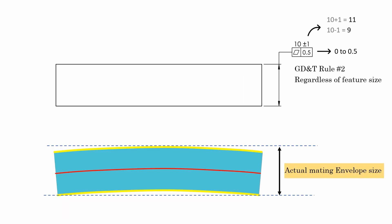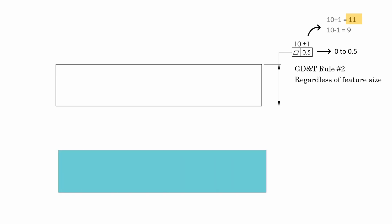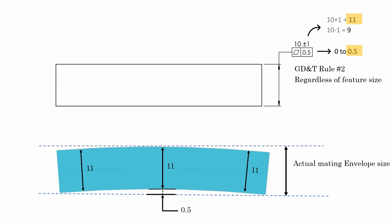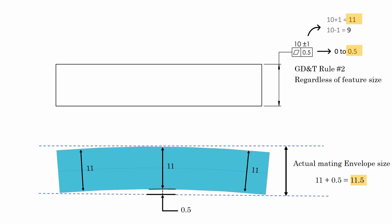So the maximum actual mating envelope — the maximum boundary condition of this plate — will occur when the plate is produced at its MMC, meaning 11 mm throughout the thickness, and at the same time the plate is bent in such a way that creates the maximum flatness deviation of 0.5 mm. So the outer boundary, the actual mating envelope, would be 11 mm plus 0.5 mm flatness deviation, giving 11.5 mm. It seems straightforward, but if you are familiar with GD&T rule 1, this might not seem quite correct.